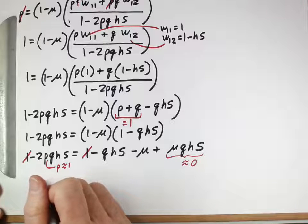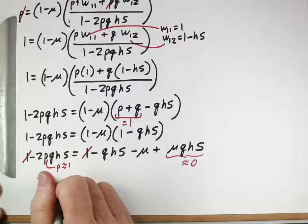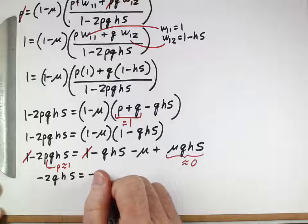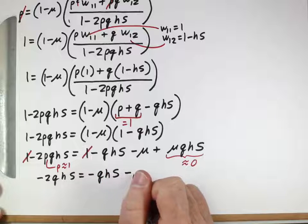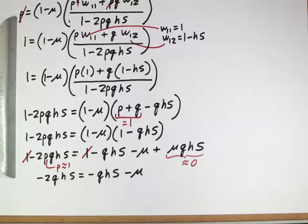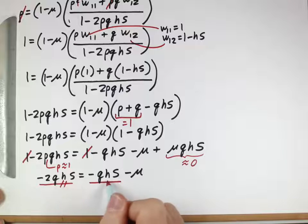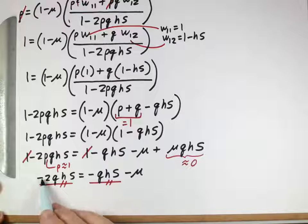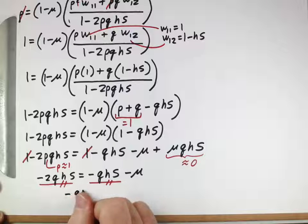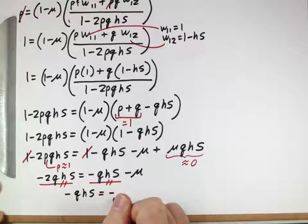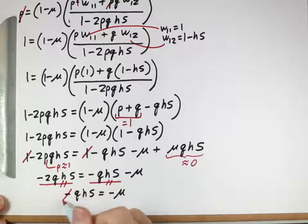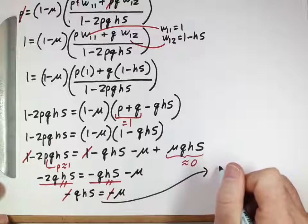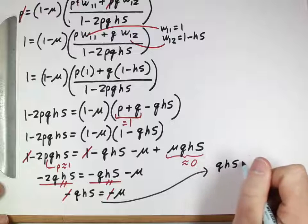So what do we get on the left-hand side? We get negative 2qhs equals negative qhs minus μ. These terms can be combined. When you add this to both sides, you'll actually knock out one of those two. So you'll have a negative qhs equals negative μ. Nobody likes negative signs, so we can multiply both sides by negative 1. And then moving this over, we now have qhs equals μ.